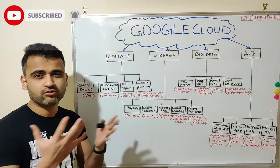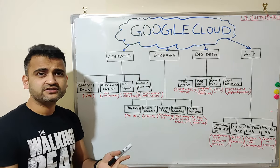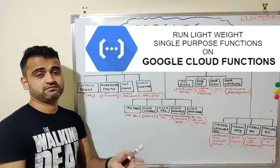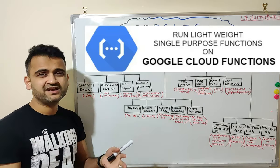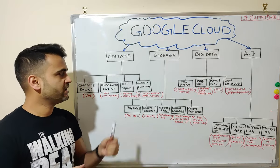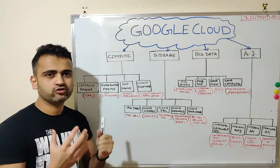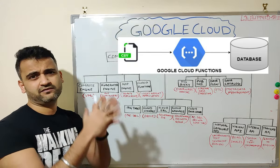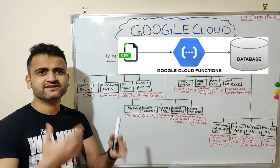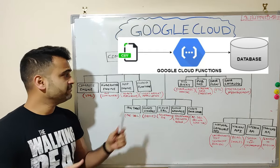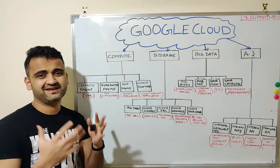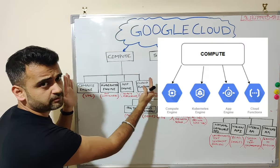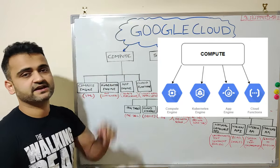Cloud Functions works similarly to App Engine, but what is the basic difference? Cloud Functions lets you deploy your application, but it is meant mostly for single-purpose, lightweight applications, whereas App Engine is meant for complex and large-scale applications. For example, if you want to write a program that fetches data from your CSVs, massages that data, and loads it into a database, Cloud Functions is the right lightweight technology for that single-purpose function.